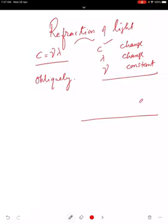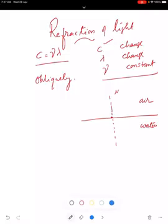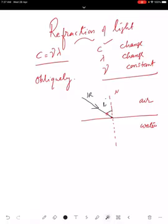Suppose we take two mediums — this is air medium and this is water. Take a point here, draw a normal perpendicular to the surface. Light travels in this way — this is called oblique incidence. This is the incident ray, and the angle between the incident ray and the normal is called the angle of incidence. This red line represents the separating surface between air and water.